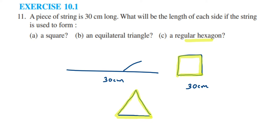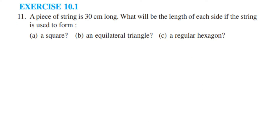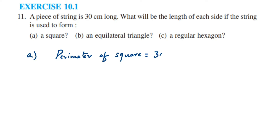For the first shape, a square: we have understood that 30 cm is the perimeter of each given shape. So we can write: perimeter of square = 30 cm. We know the formula — perimeter of square = 4 × side. So 4 × side = 30 cm.